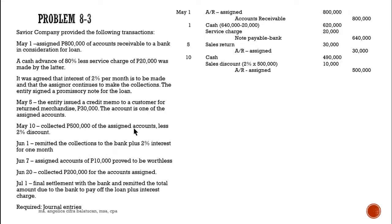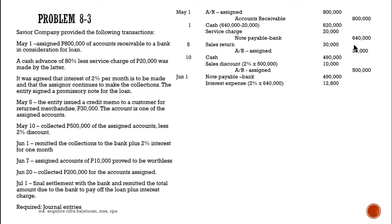On June 1, we remit the collections to the bank plus 2 percent interest for one month. Entry: debit note payable — bank 490,000 for the remittance. Record interest expense at 2 percent of 640,000, which is 12,800. Credit cash for the total of 502,800. The total payment includes the principal portion remitted plus the interest.